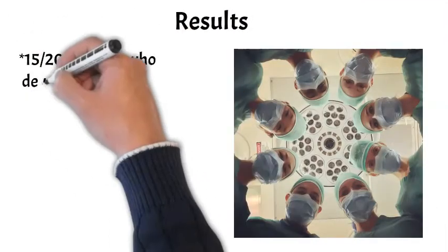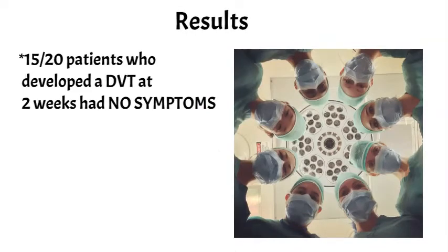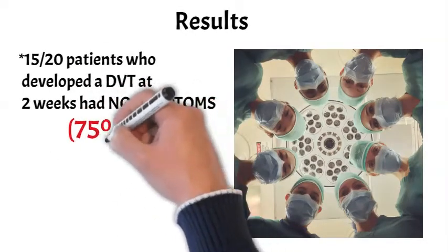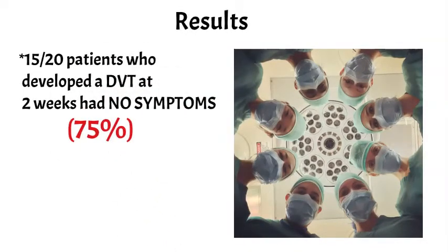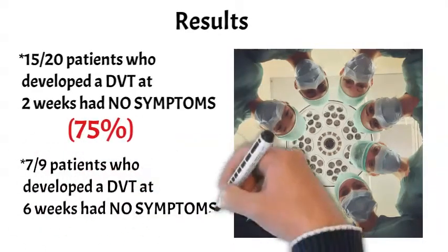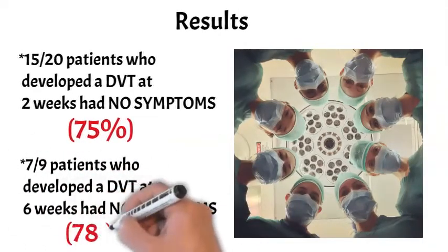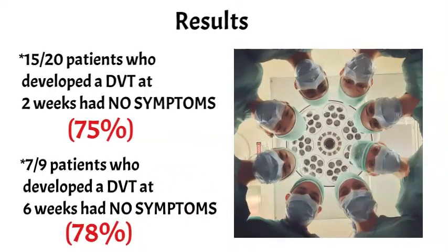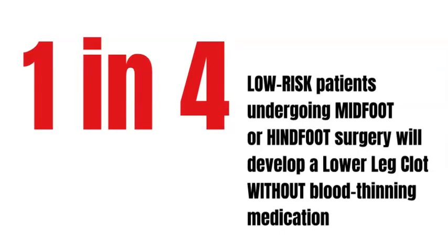Another interesting finding was that most people didn't show many signs of these clots. At least 75% of patients who had a clot at two weeks showed no clinical symptoms — such as calf pain — which often indicate DVT. Similarly, 78% of patients with DVT at six weeks also had no symptoms. So just because you feel okay doesn't mean you necessarily don't have a clot. The crux of this study is that at least one in four patients having low-risk foot and ankle surgery are at risk of getting a clot.